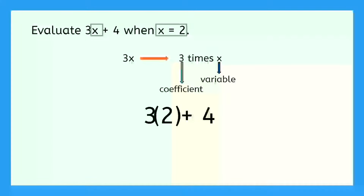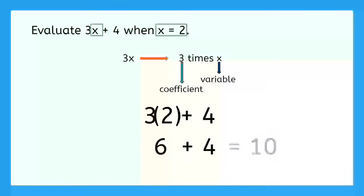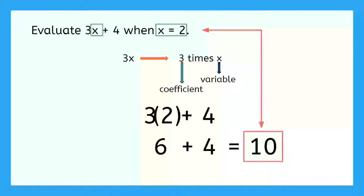Now we can evaluate our expression using order of operations. First we multiply: 3 times 2 is 6. Then we add the 4, and 6 plus 4 is 10. So when this expression is evaluated for x equal to 2, we get an answer of 10.